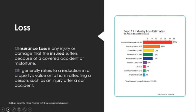Last one — insurance loss. A loss is any injury or damage that the insured suffered because of a covered accident or misfortune. If you look at the percentages of losses, you have business interruptions that could be from power outages or upgrades and changes that shut down the business temporarily. Property and workers comp is a little lower on the list, which is interesting given how many lawyers are out there fighting for workers comp on a daily basis.